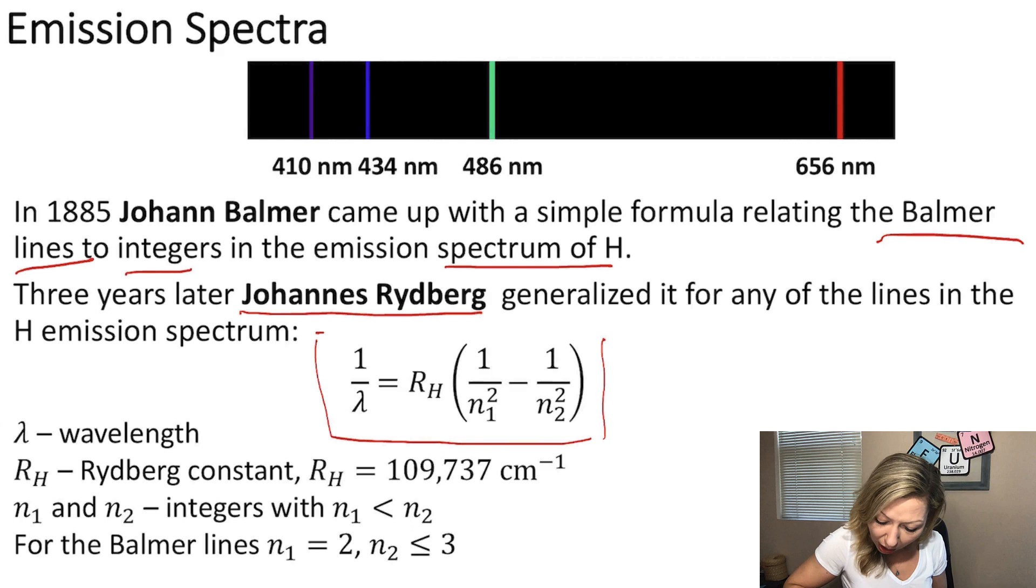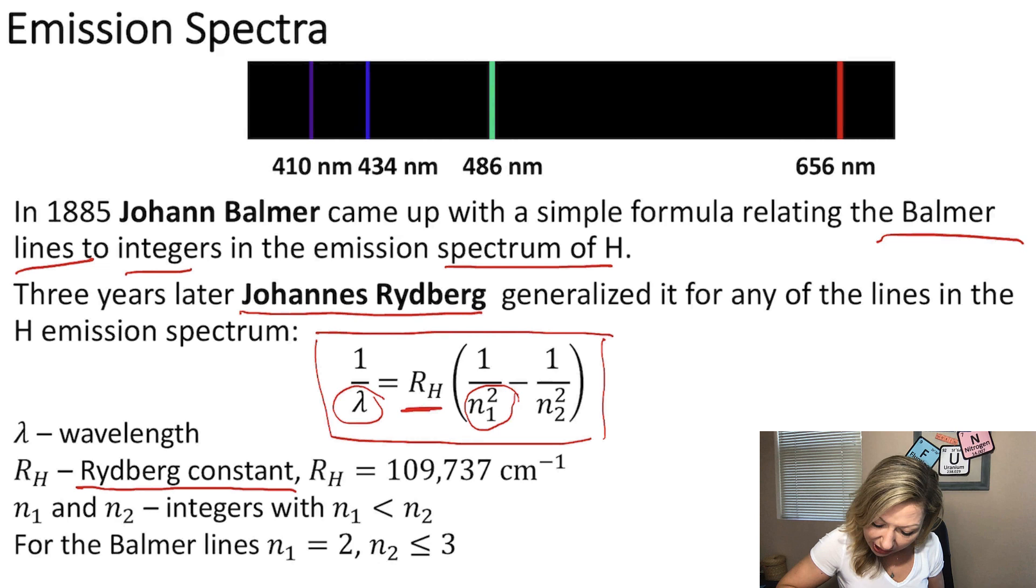1 over wavelength equals RH, which is called the Rydberg constant, and that is multiplied by 1 over N1 squared minus 1 over N2 squared. N1 and N2 are integers, with N1 being smaller than N2 all the time. And to describe the Balmer series, we need to have N1 equals 2 and N2 be at least 3 or a larger whole number.